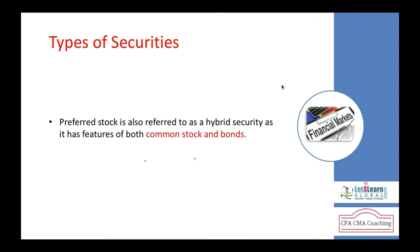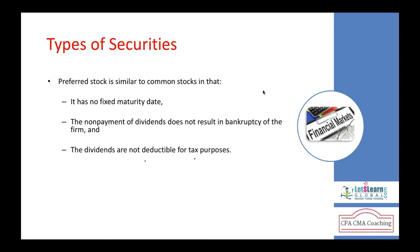Preferred stock and common stock compared: preference shareholders get fixed dividends and have priority in case of bankruptcy or dissolution. One important point is that dividends paid to both preference and common shareholders are not tax-deductible expenses — dividends are paid from net profit after tax. In contrast, interest paid on debt instruments like bonds is tax-deductible.